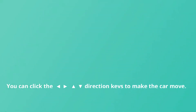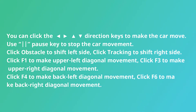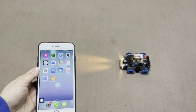You can click the direction keys to make the car move. Use the vertical bar pause key to stop the car movement. Click Obstacle to shift to the left side; click Tracking to shift to the right side. Click F1 to make upper-left diagonal movement, F3 for upper-right diagonal, F4 for back-left diagonal, and F6 for back-right diagonal movement.